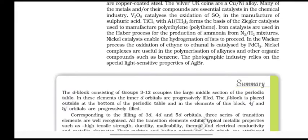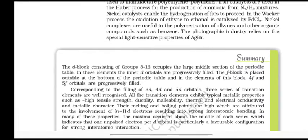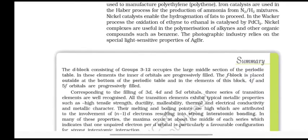Iron catalysts are used in the Haber process for production of ammonia from N2 and H2 mixtures. Nickel catalysts enable the hydrogenation of fats to proceed. In the Wacker process, the oxidation of ethene to ethanal is catalyzed by PdCl2. Nickel complexes are useful in polymerization of alkynes and other organic compounds such as benzene. The photographic industry relies on the special light-sensitive properties of AgBr.